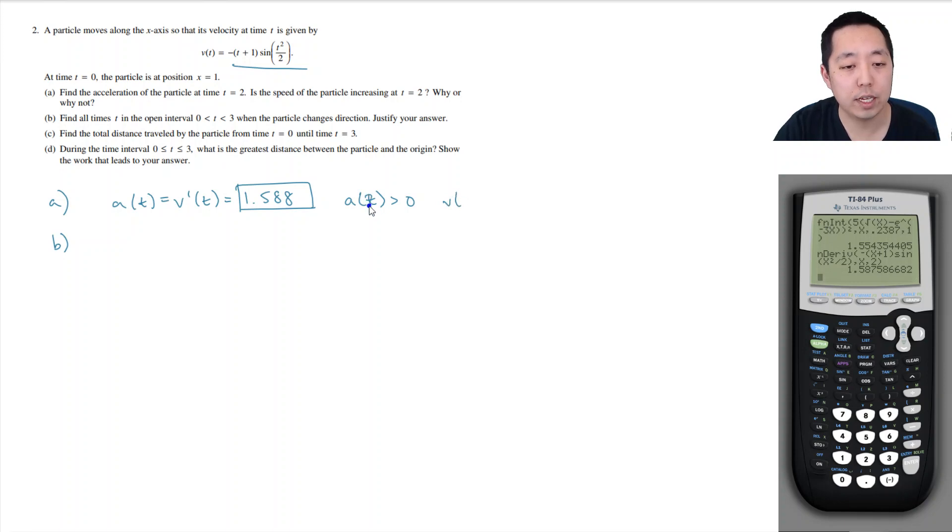So what I want to know is the sign of velocity. a at 2 is greater than 0. What's v at 2? Well, that's equal to negative 2 plus 1 times sine of 1. So let's compute what that is. It's negative 3 times sine of 1. I get negative 2.52. So in this case, it's decreasing. Speed is decreasing, or the answer is no, because a of 2 and v of 2 have different signs.